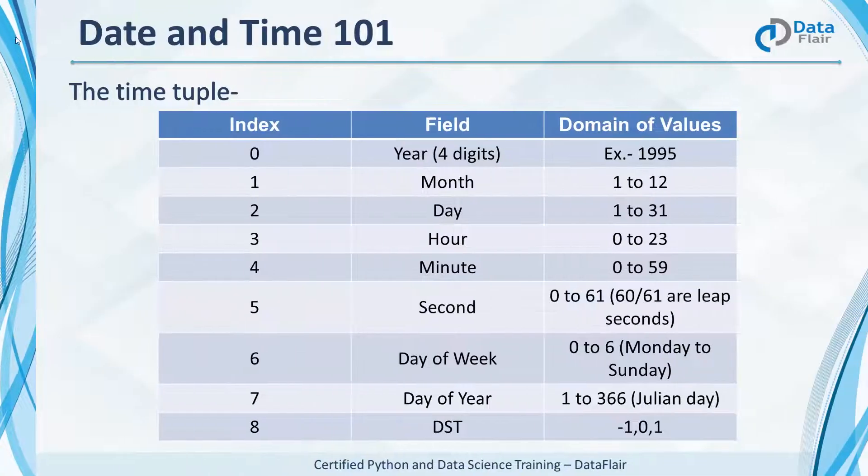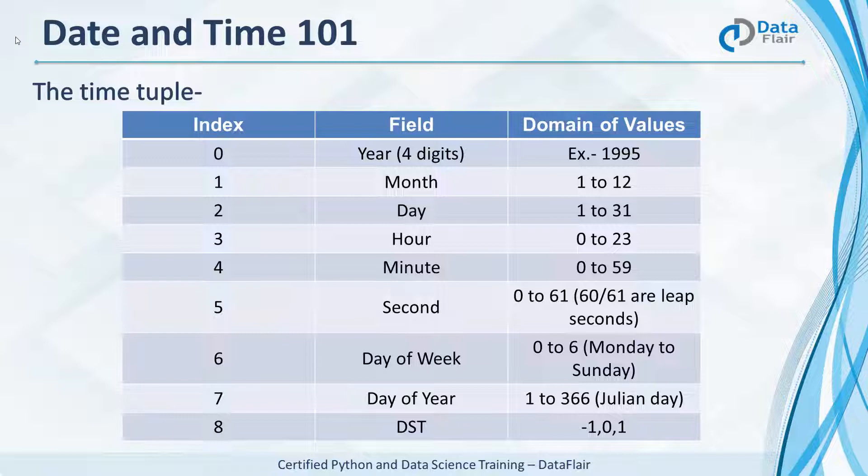Time is represented by nine values. This is the time tuple. It's made of year, month, day, hour, minute, second, day of week, day of year, and the DST.